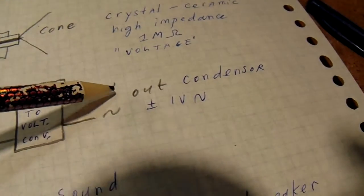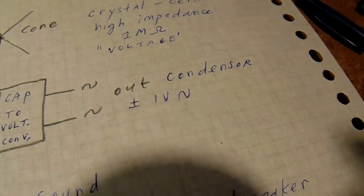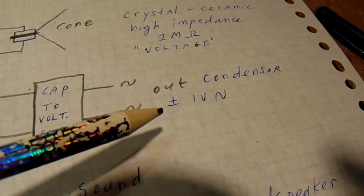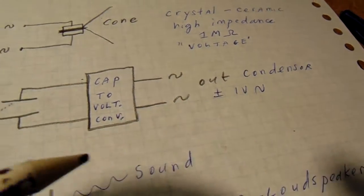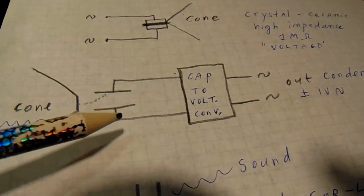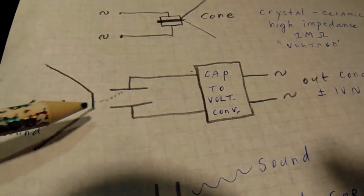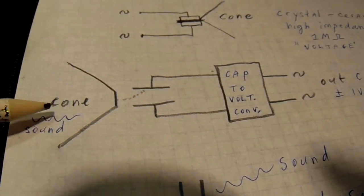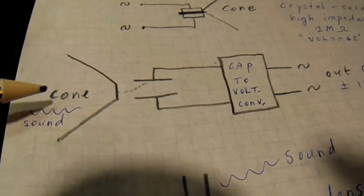The condenser microphone is also very popular nowadays. In every cell phone there is a condenser microphone. It consists of a condenser. One of the plates is connected to a cone. Here the sound goes in.